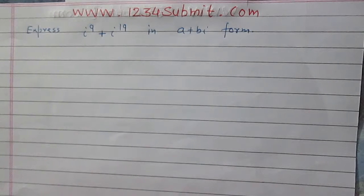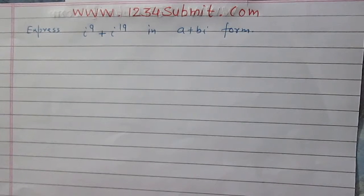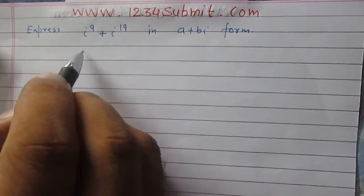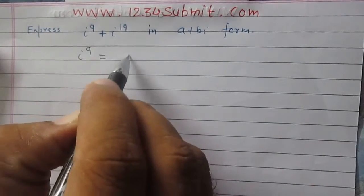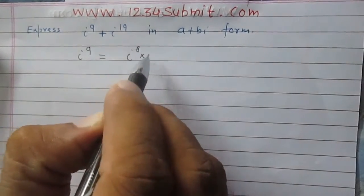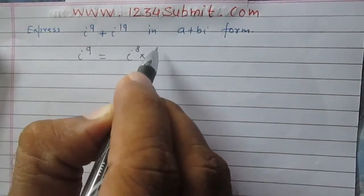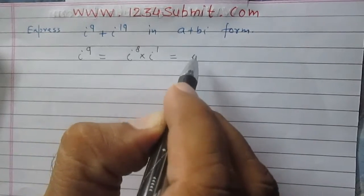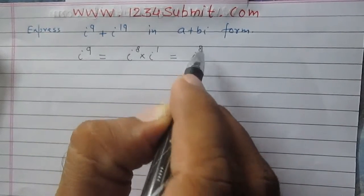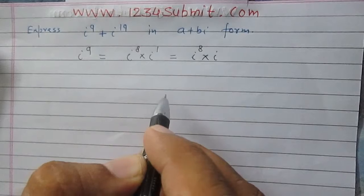Express iota raised to power 9 plus iota raised to power 19 in a plus b iota form. Let us consider iota raised to power 9. It is iota raised to power 8 into iota raised to power 1, which is iota itself. So iota raised to power 8 into iota.